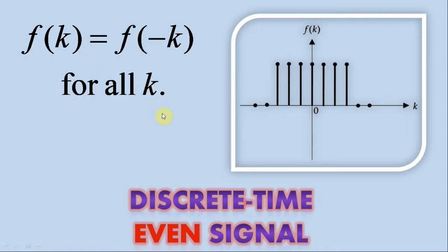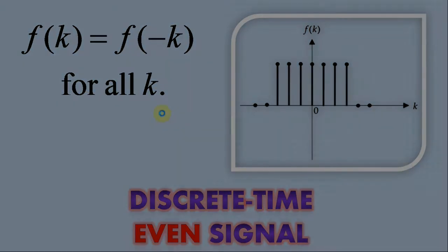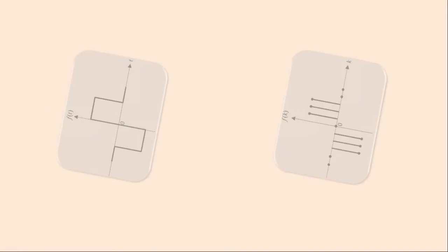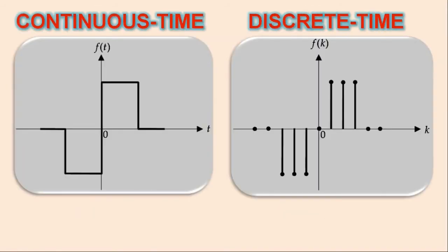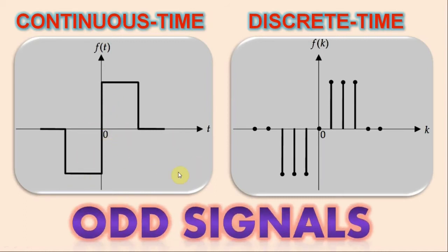Now consider another illustration. You may observe that the signals shown in this illustration are anti-symmetrical about the time origin. Such signals are said to be odd signals.